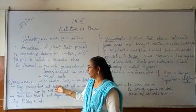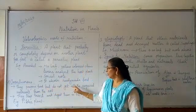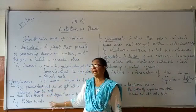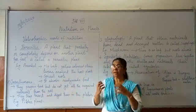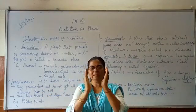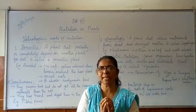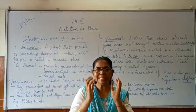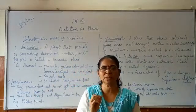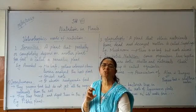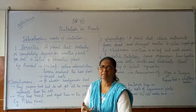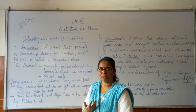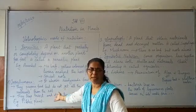They prepare food but do not get all the required nutrients from the soil. So they trap insects using a pot-like structure, inside which digestive juices are present. These digestive juices digest the insects and the plant gets the nutrients. Example: pitcher plant.